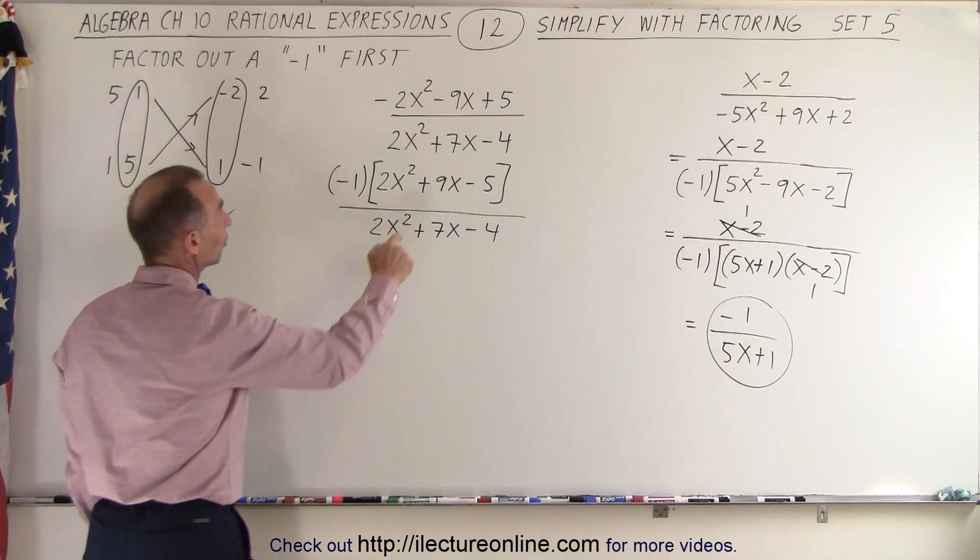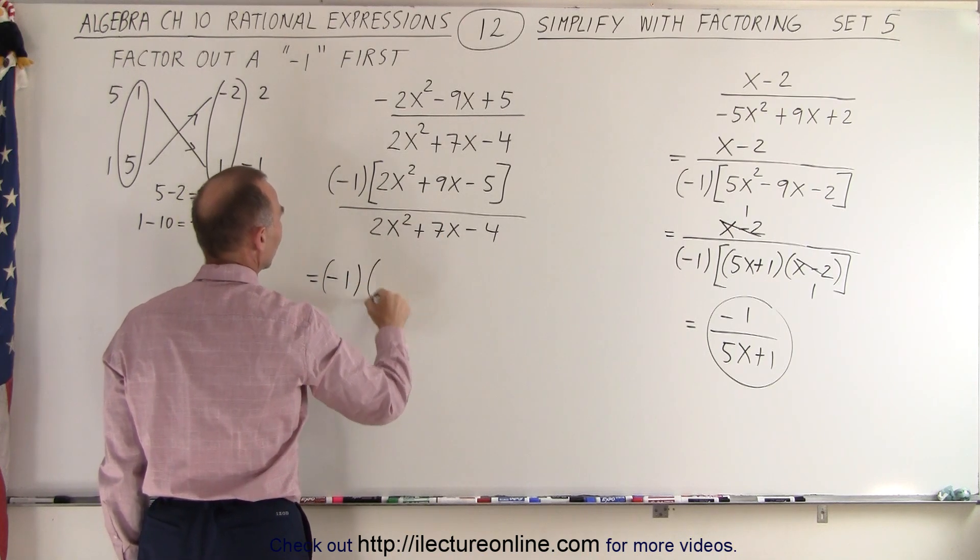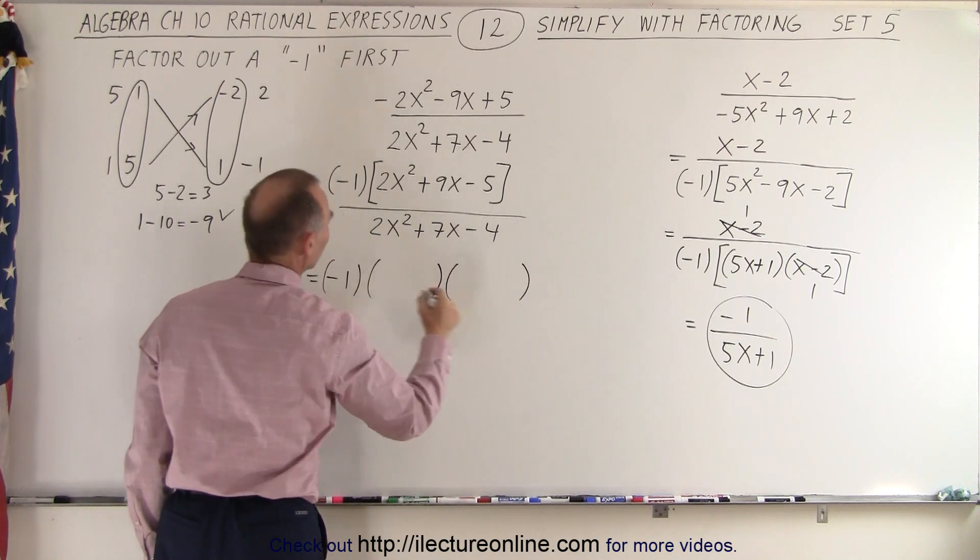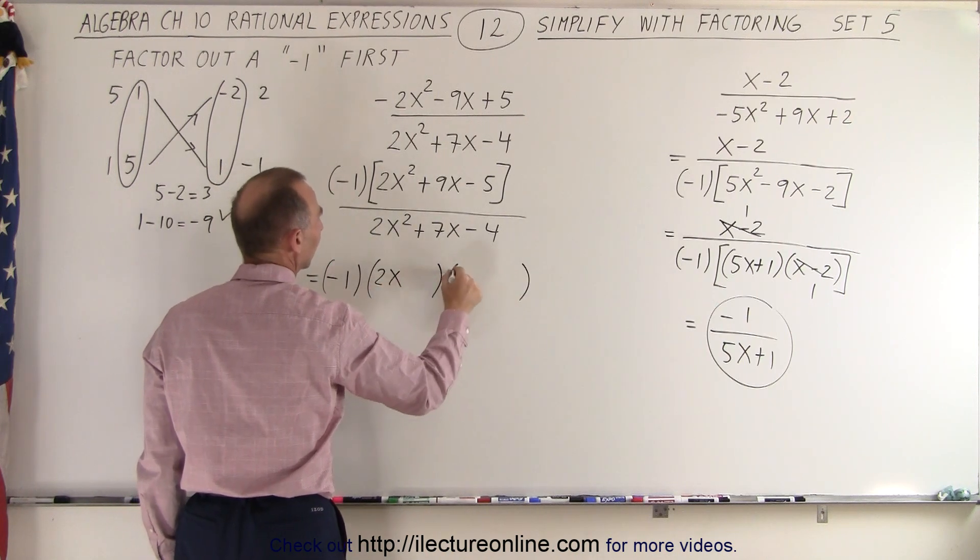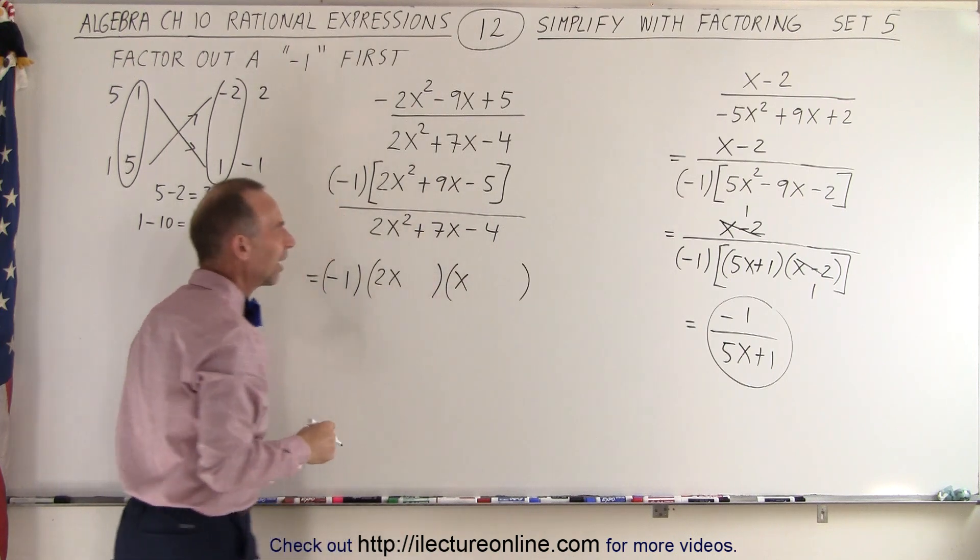Next, what we're going to do here is factor the numerator and the denominator. So this becomes negative 1 times the product of two binomials. We'll need a 2x and an x. If this is negative and that's positive, we need a positive and negative sign.